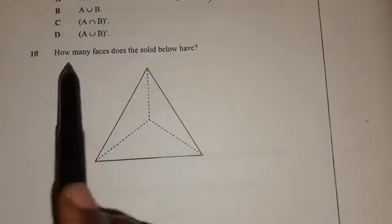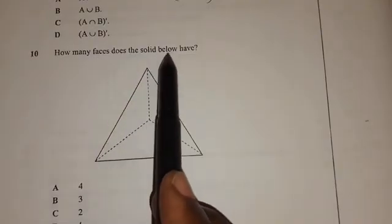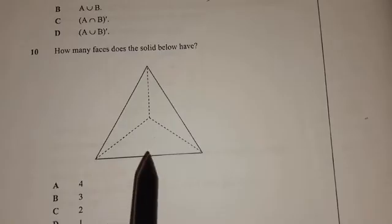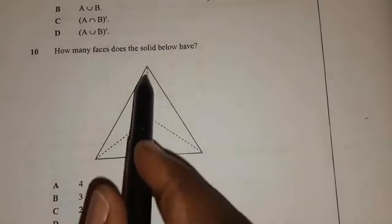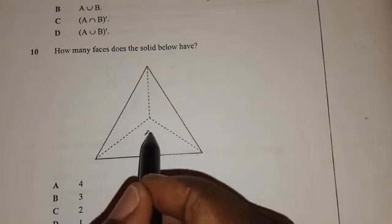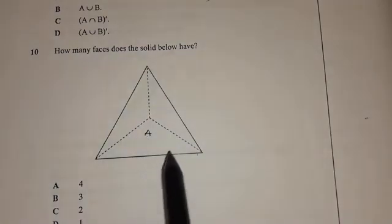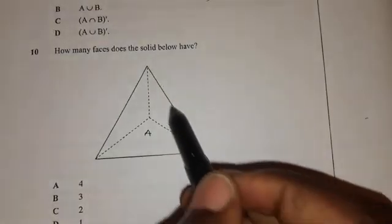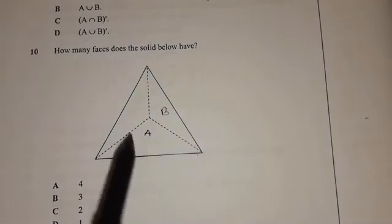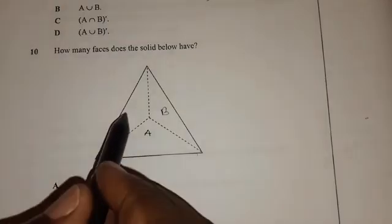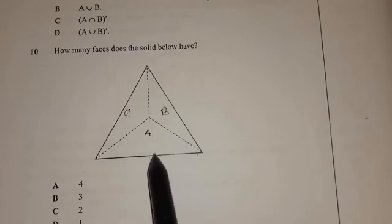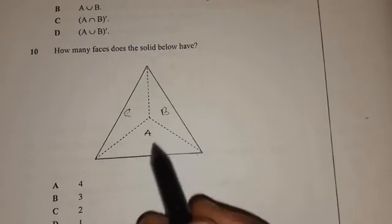Number 10. How many faces does the solid below have? So this solid has the front face. The front face, I'll call it A. Then it has this back face, I'll call it B. Then it has this another back face, I'll call it C. But again, down here, it has another face, this face down from down here, I'll call it D.